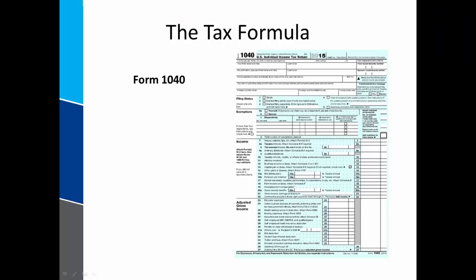This is the Form 1040, the US individual income tax return. It is one page front and back with 79 lines. Looks simple, right? Well, it isn't. Completing any line of the 1040 will likely require you to complete and attach to the return additional schedules and forms.